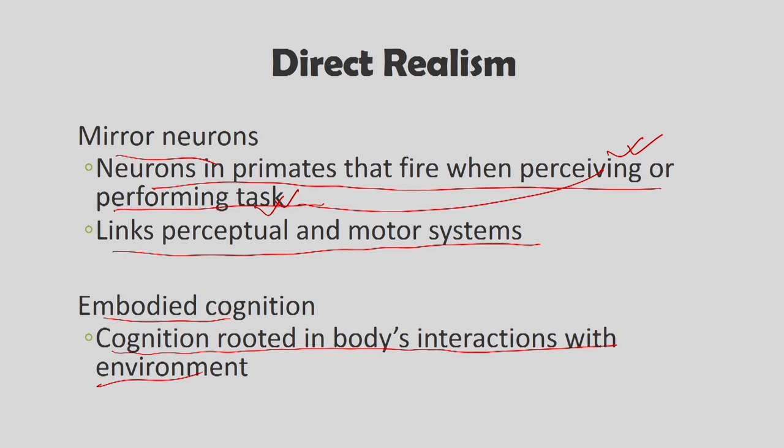That brings us to the end of this section. What we did today is look at how speech perception happens in neonates — how small children and just-born children perceive speech. We saw several mechanisms and ways of responding, and the basic idea is that these small children, even from one month after birth, are able to distinguish speech — which happens because mothers speak to them in a very particular manner.